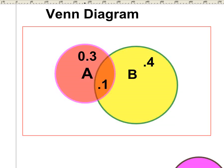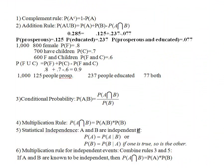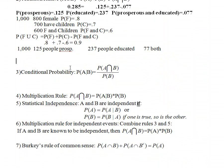This segues into the next formula: the conditional probability formula. The conditional probability formula tells us the probability that you are A given that we know that you are B. To calculate the probability of A given B, we take the probability that someone is both A and B — that intersection — and divide by the thing that is given, B. Let's go back to our Venn diagram and see how this formula makes sense.